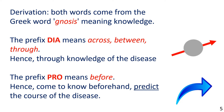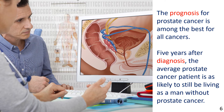Let's look at an example. In the picture we see a patient consulting his doctor, looking at a computer screen. Sentence example: The prognosis for prostate cancer is among the best for all cancers. Five years after diagnosis, the average prostate cancer patient is as likely to still be living as a man without prostate cancer. In other words, when it comes to prostate cancer, the prognosis is good. There is a high chance a person can be cured, or the cancer can be managed so the patient lives many years. On average, five years after the disease is first identified, a patient has the same life prospects as a man without prostate cancer.